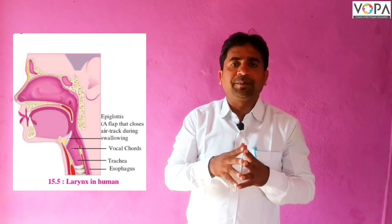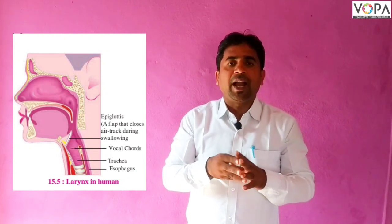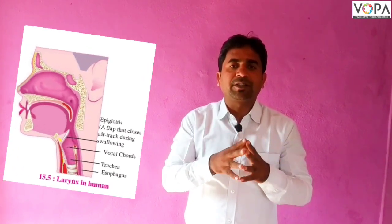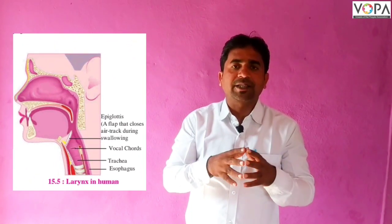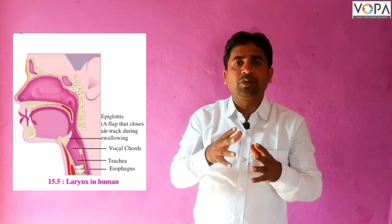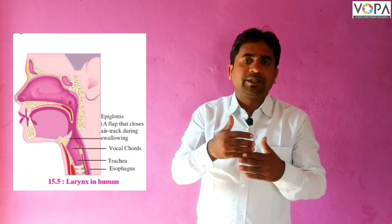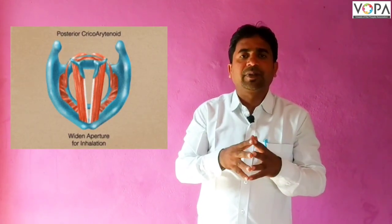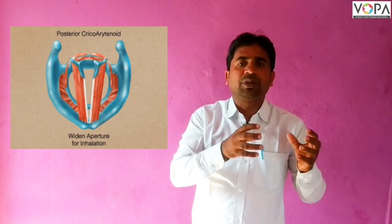The larynx is at the upper end of the windpipe. There are two vocal cords inside it. Air passes between these vocal cords through a narrow passage, and the lungs push air through this passage. Due to this, the vocal cords get vibrations. These vocal cords are connected by muscles, and these muscles help create tension in the vocal cords to produce different types of sound.